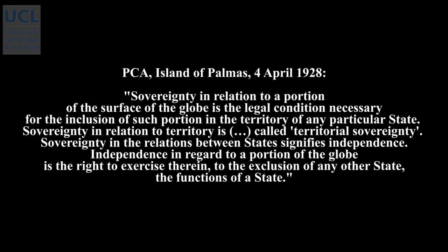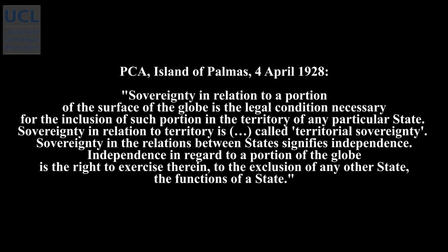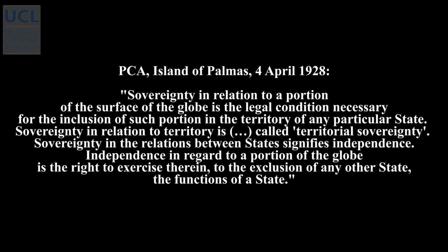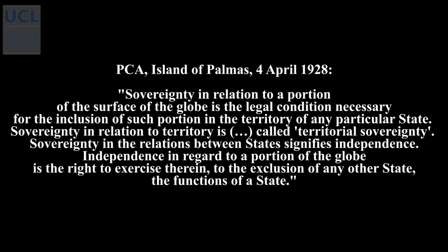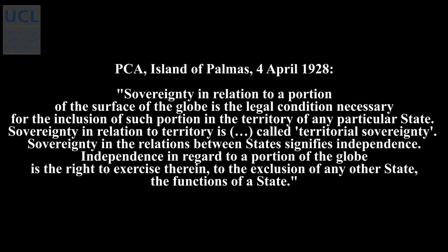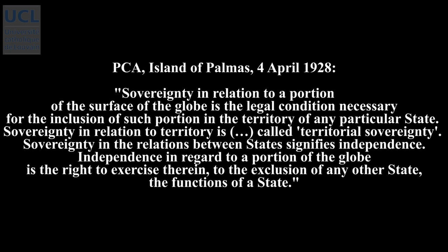In 1928, in an arbitration between the Netherlands and the United States of America about the sovereignty over the island of Palmas — also called Miangas, situated in the Pacific Ocean south of the Philippines and north of Indonesia — Max Huber, acting as sole arbitrator, famously wrote: "Sovereignty in relation to a portion of the surface of the globe is the legal condition necessary for the inclusion of such portion in the territory of any particular state. Sovereignty in relation to territory is called territorial sovereignty. Sovereignty in the relations between states signifies independence. Independence in regard to a portion of the globe is the right to exercise therein, to the exclusion of any other state, the functions of a state."